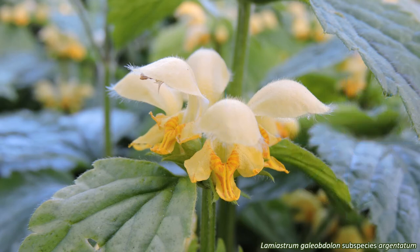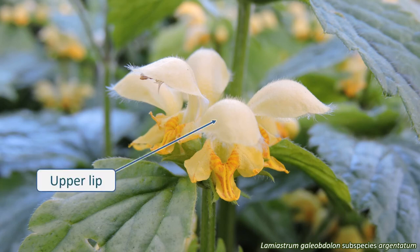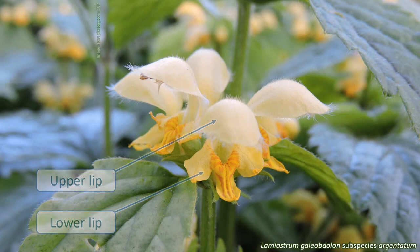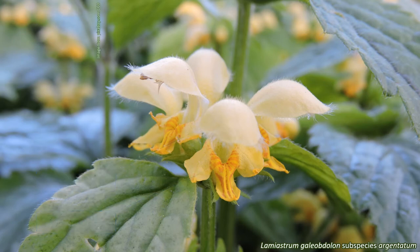The petals are fused to form a tube with an upper lip and a lower lip at its end. The upper lip usually has two lobes and the lower lip has three lobes. Lamiaceae species are insect pollinated and the lower lip provides a landing platform for insects such as bees.